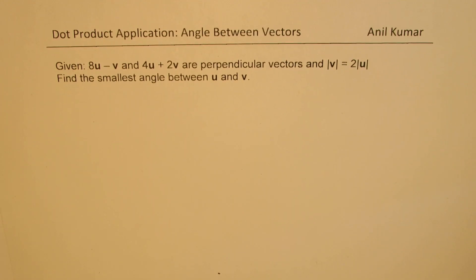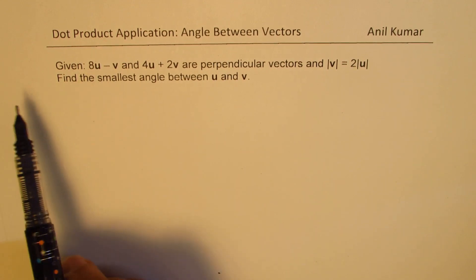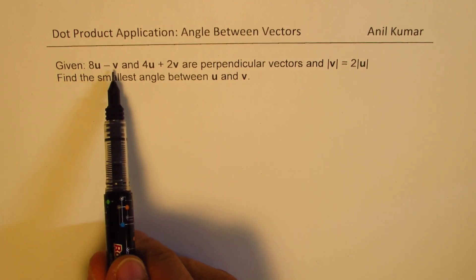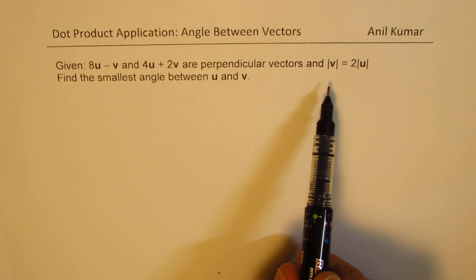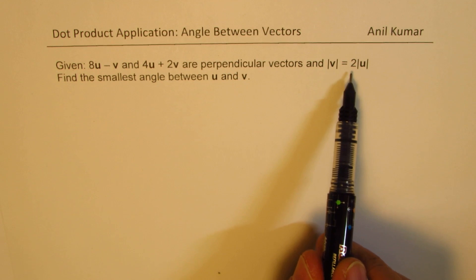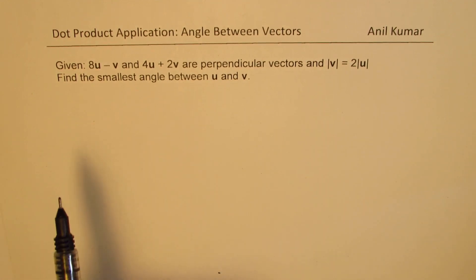I'm Anil Kumar, sharing with you a test question on dot products. We are given vectors u and v. Given 8u minus v and 4u plus 2v are perpendicular vectors, and the magnitude of v is twice the magnitude of u. Find the smallest angle between u and v.